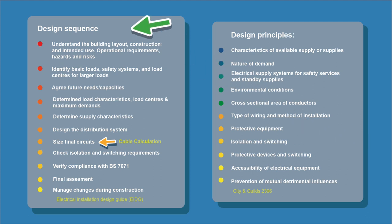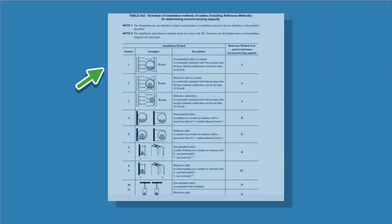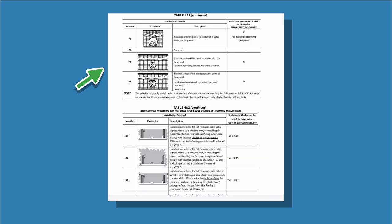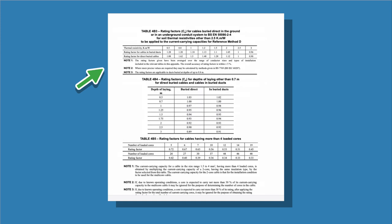For method of installation, we have our design sequence and design principles — we'll come back to this later. We're sizing our final circuits and finding the cross-sectional area of the conductors needed. For this example: it's an EV charger, the circuit length is 25 metres, it's clipped direct, going through a high temperature section — that could be a conservatory, loft, or boiler room — and we're using twin-and-earth cable because it's all internal. We look in Appendix 4 of BS 7671, which has all our reference methods, installation methods, correction factors, and ambient temperature tables — essential for our calculations.